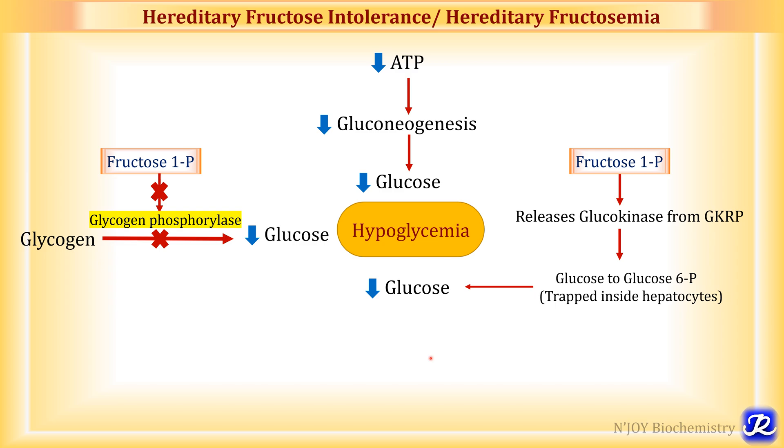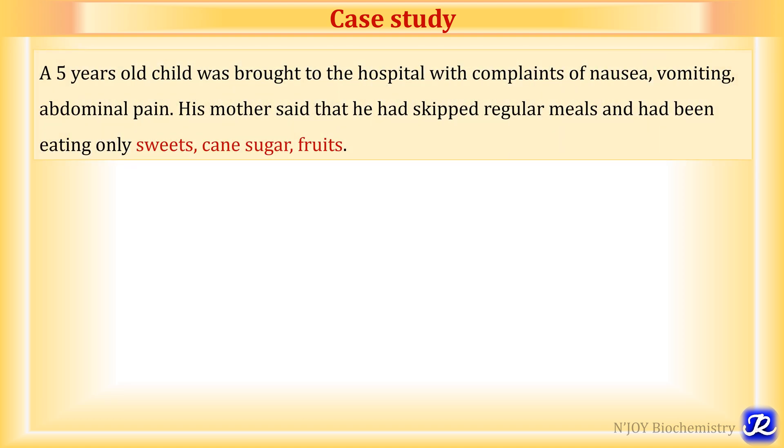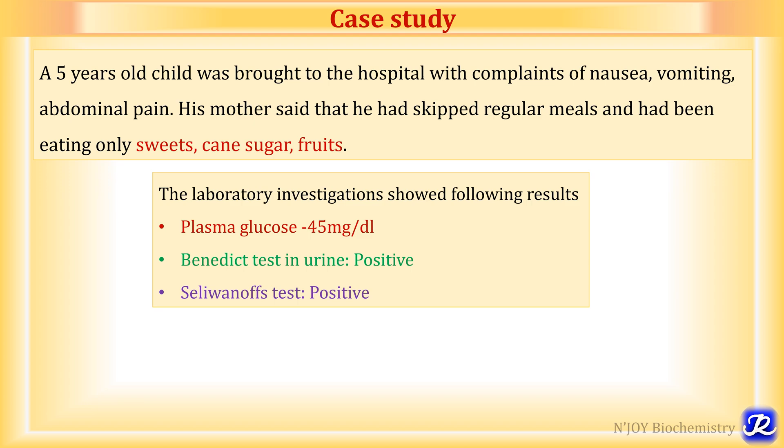Let's study a case of hereditary fructose intolerance. A five-year-old child was brought to the hospital with complaints of nausea, vomiting and abdominal pain. His mother said that he had skipped regular meals and had been eating only sweets, cane sugar and fruits. Laboratory investigations showed: plasma glucose was 45 mg/dL — decreased, indicating hypoglycemia. Benedict's test in urine was positive, indicating reducing sugars in the urine.